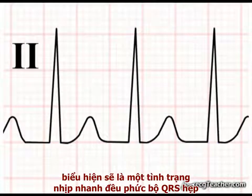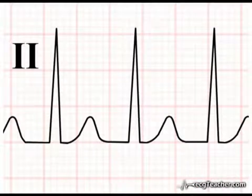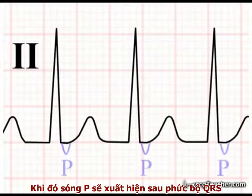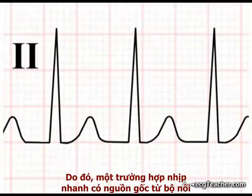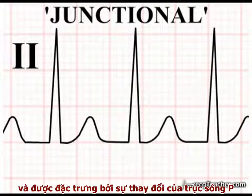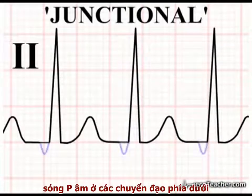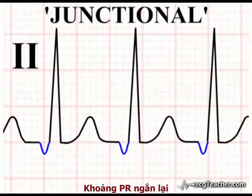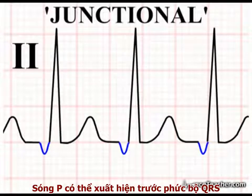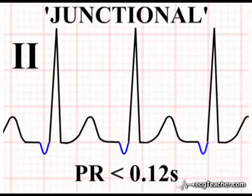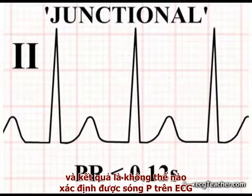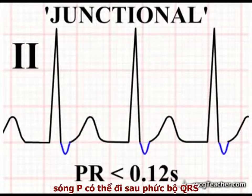In this scenario, we see a regular, narrow complex tachycardia with no obvious P wave activity. It is even possible for atrial depolarisation to follow ventricular depolarisation in a junctional rhythm, with the P wave occurring after the QRS complex. So, a tachycardia arising from a focus in the junctional region is regular, narrow complex, and is characterised by a shift in the P wave axis such that the P waves are negative in the inferior leads. The PR interval is shortened — the degree of shortening varies to the extent that the P wave may precede the QRS complex with a PR interval less than the lower limit of normal. Alternatively, the P waves may be coincident with the QRS complexes, and consequently unidentifiable on the ECG. In some cases, the P wave may follow the QRS complexes.